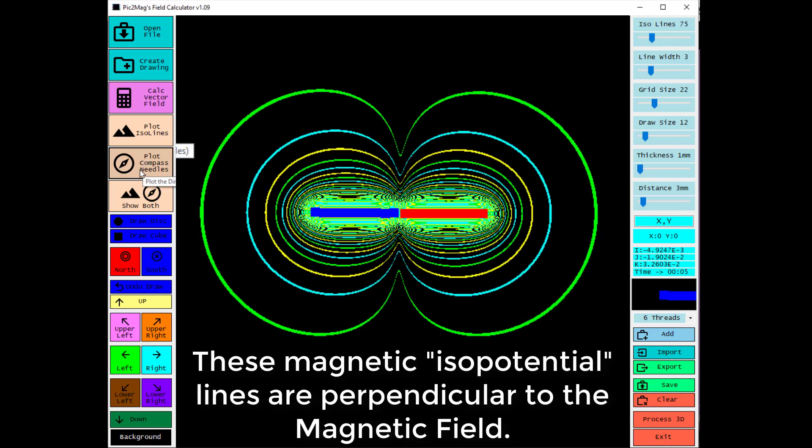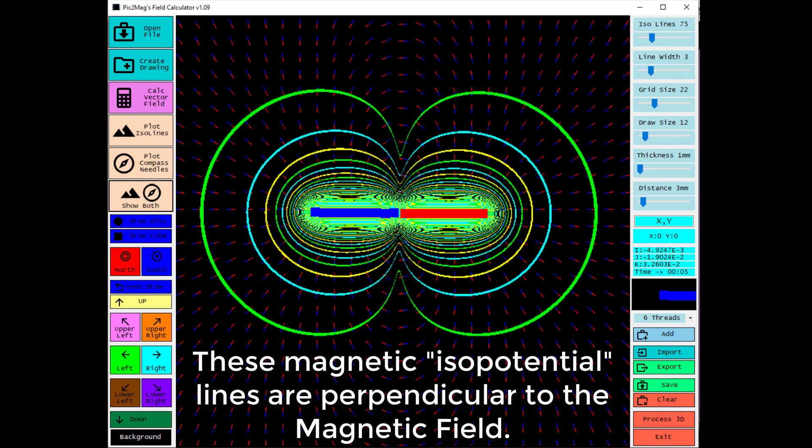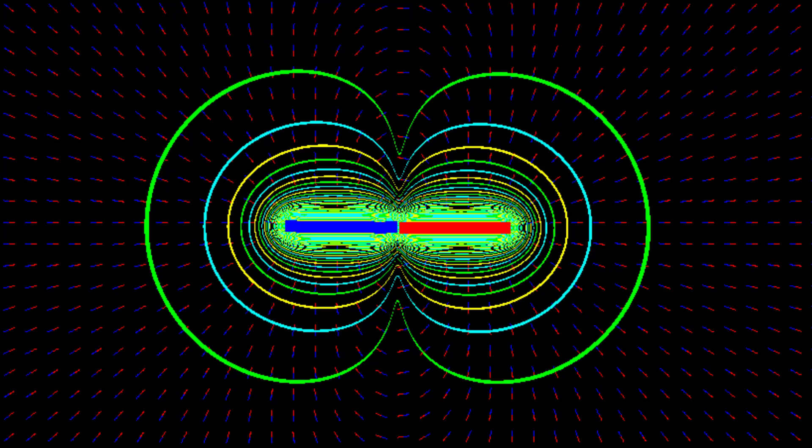These magnetic isopotential lines are perpendicular to the magnetic field. A close-up of the magnetic field and isopotential lines.